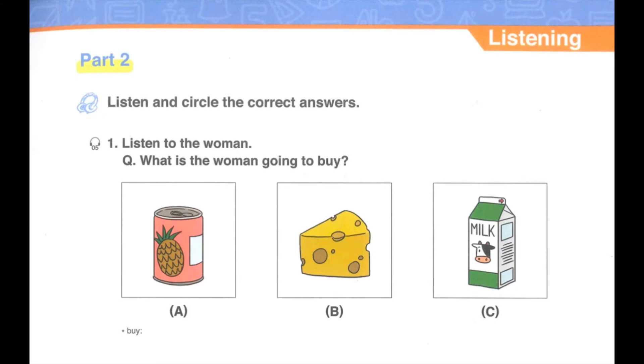Part 2: Listen and circle the correct answers. Number 1, listen to the woman: I'm going to stop by the supermarket and get some milk. What is the woman going to buy?